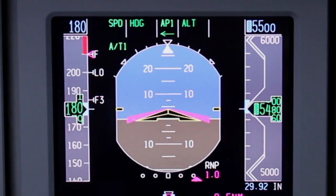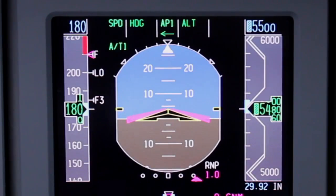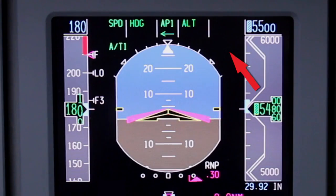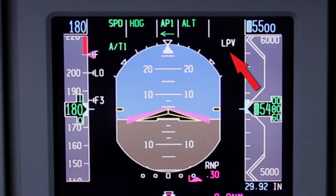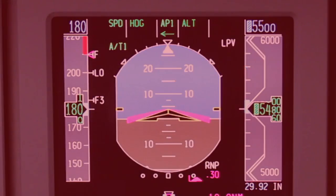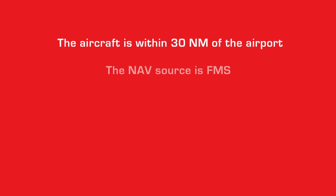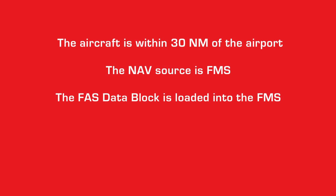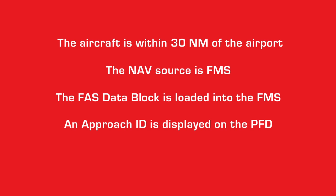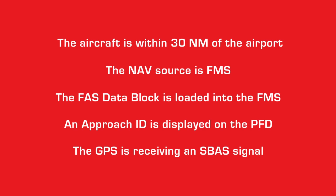After an RNAV LPV approach is loaded into the FMS, the LPV armed enunciator is displayed in white on the PFD when the following criteria are met: the aircraft is within 30 nautical miles of the destination airport, the NAV source is FMS, the FAS data block is loaded into the FMS, an approach ID is displayed on the PFD, and the GPS is receiving an SBAS signal.